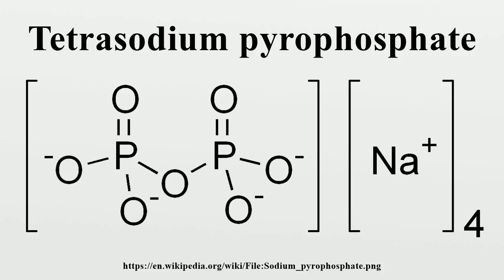There is also a hydrated form, Na4P2O7·10H2O. Tetrasodium pyrophosphate is used as a buffering agent, an emulsifier, a dispersing agent, and a thickening agent, and is often used as a food additive.